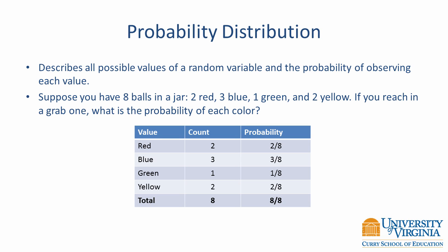A probability distribution describes all possible values of a random variable and the probability of observing each one. For example, suppose you have eight balls in a jar — two red, three blue, one green, and two yellow. If you reach in and grab one, the probability of a red ball is 2/8, and the probability of a green ball is 1/8. All other values and their corresponding probabilities are shown in the table. In many cases, the problem is too large to enumerate every outcome, and we rely on a mathematical function to obtain the probability of each event.